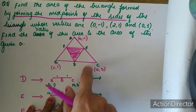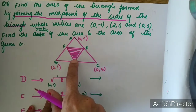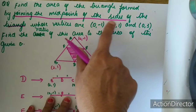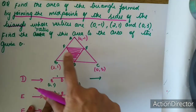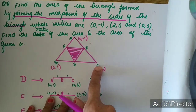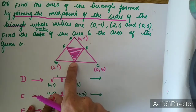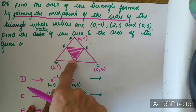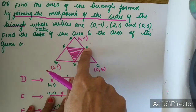Once again I will explain the question. Triangle ABC is given. They are asking you to find the area of the triangle formed by joining the midpoints of the sides — D is the midpoint of BC, F is the midpoint of AB, and E is the midpoint of AC. If I join all these 3 points I get a triangle, and I have to find the area. For that I need the coordinates of points D, E, and F.